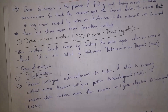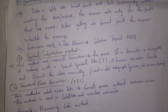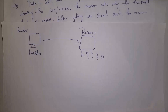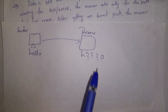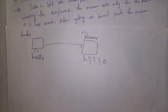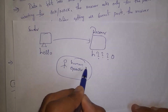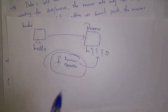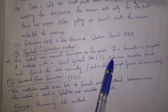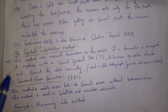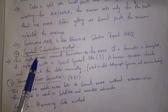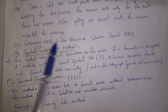The second error correction method is the Symbol Substitution method. Whenever the receiver receives any characters with errors, this method replaces the corrupted character with a special symbol like a question mark. A human operator then identifies the question marks and corrects the errors manually. This method uses manual correction to fix errors and was used in older telegraph systems; it is not commonly used today.